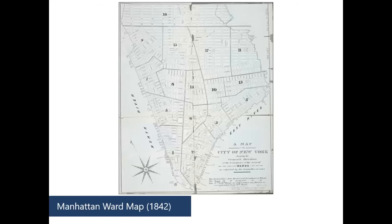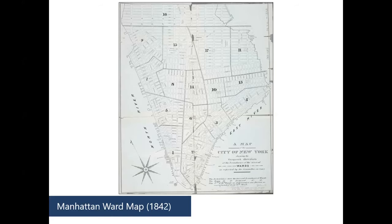The next type is a ward map — a map showing the boundaries of city wards, which are usually created as election districts. Old census records often refer to a person as living within a particular ward of the city. You can often find narrative descriptions of ward boundaries in newspapers or city directories, but if you're a visual person, locating the ward on a map will make a lot more sense than trying to follow a written description.